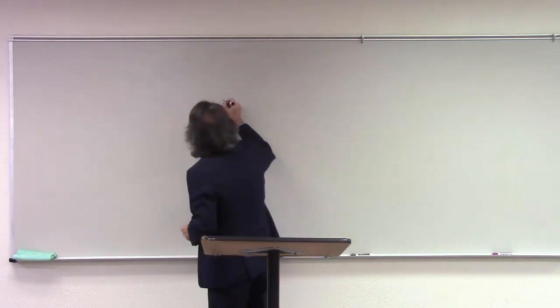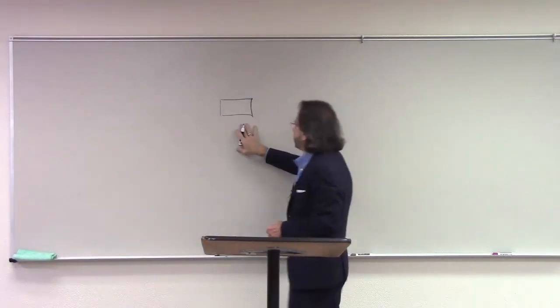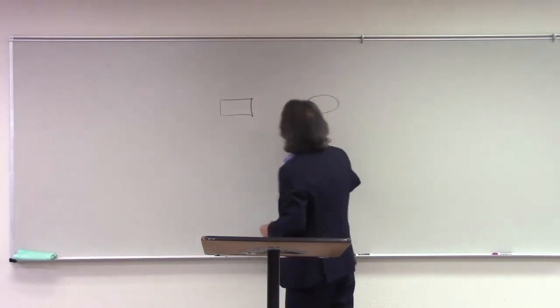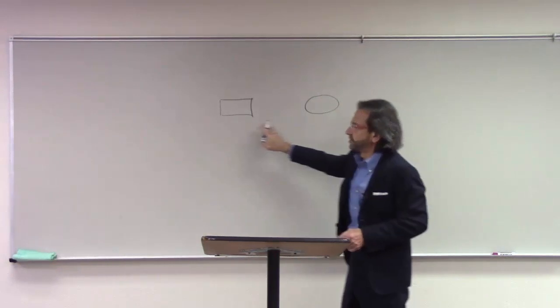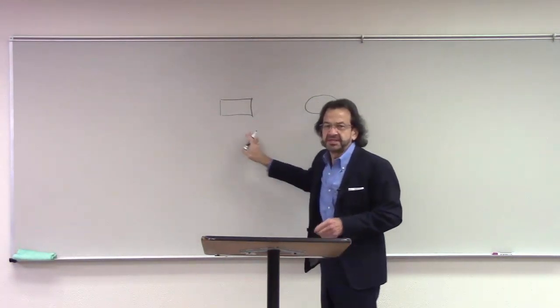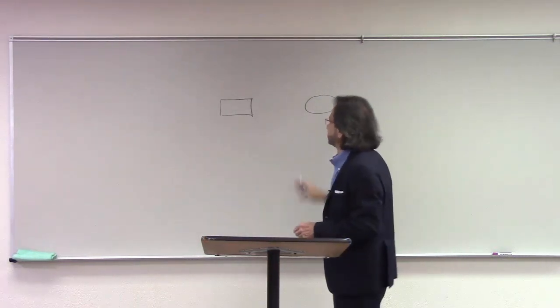On a genogram, squares are going to be the boys and circles are going to be the girls. A larger square is going to be the adult. A smaller square or circle is going to be a child. So these are adults.